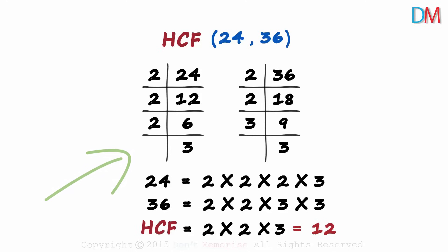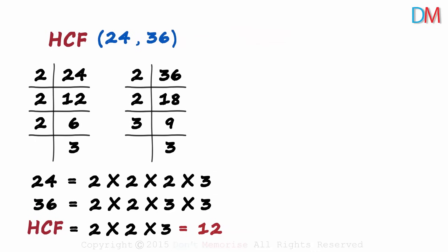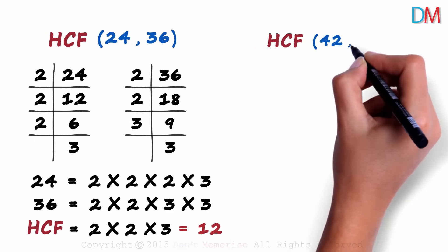This is the prime factor method to find the highest common factor of two numbers. In the next session, we will solve for the HCF of 42 and 56.